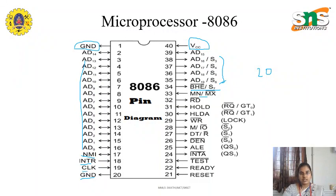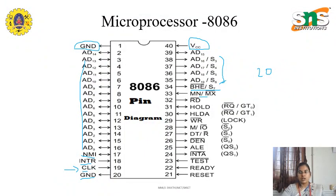Apart from VCC and ground, we have the clock signal. The clock signal is used to enhance the clock frequency of the IC. Whenever the clock is given, the data transfer gets enabled. The clock frequency should be high for faster data processing. Apart from the data pins and interrupts, we have the control pins like hold, hold-acknowledge, and memory or input/output. We have the option of when the device should be acting as memory and when the device should be acting as input or output device.